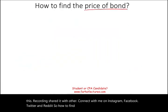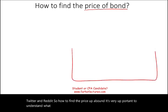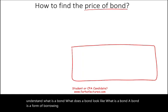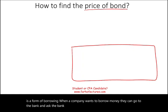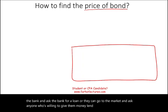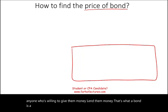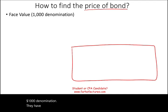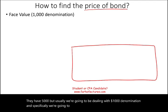So how to find the price of a bond? It's very important to understand what a bond is. A bond is a form of borrowing. When a company wants to borrow money, they can go to the bank and ask for a loan, or they can go to the market and ask anyone who's willing to lend them money. That's what a bond is — a form of borrowing by the company. Usually, bonds come in $1,000 denomination, and we're going to be dealing specifically with corporate bonds.